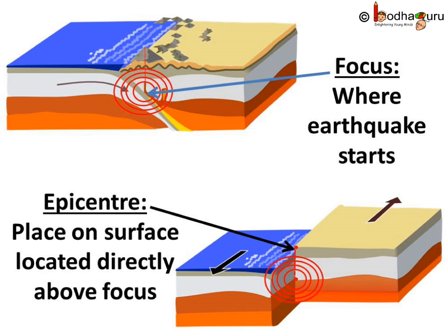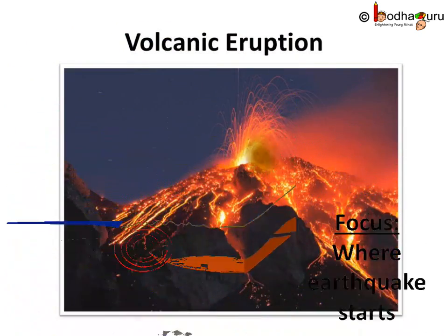The earthquake begins deep inside the crust. That point is known as the focus of the earthquake. The point on the earth's surface located directly above the focus is called the epicenter. Generally, it is this area which feels the more powerful waves and suffers the greatest damage.